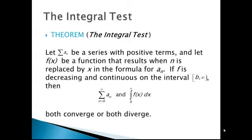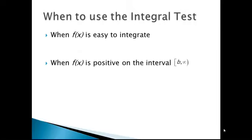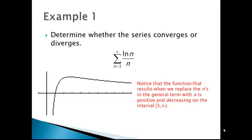In other words, if we replace the n's in the general term with x's and compute the antiderivative of the resulting function, if that antiderivative converges then so does the series, and if it diverges then so does the series. We use the integral test when f of x is easy to integrate, when f of x is positive on the interval from b to infinity, and when f of x is decreasing on that interval. A graph can generally help us determine if f of x is positive and decreasing.